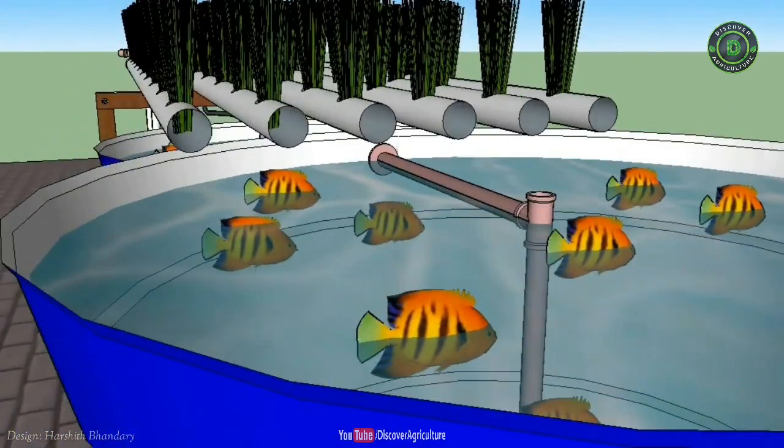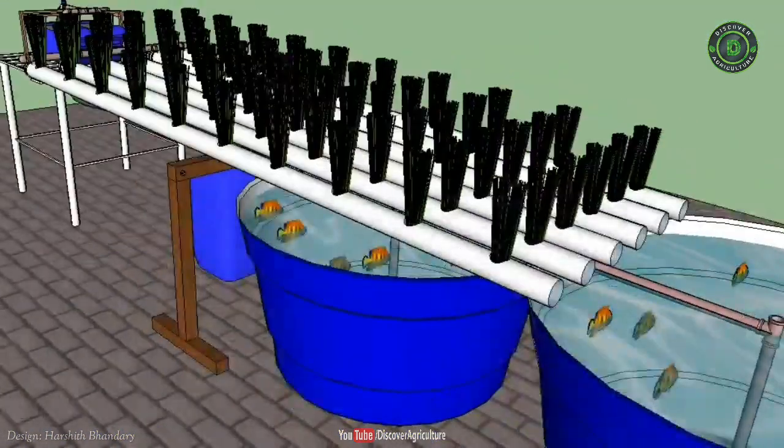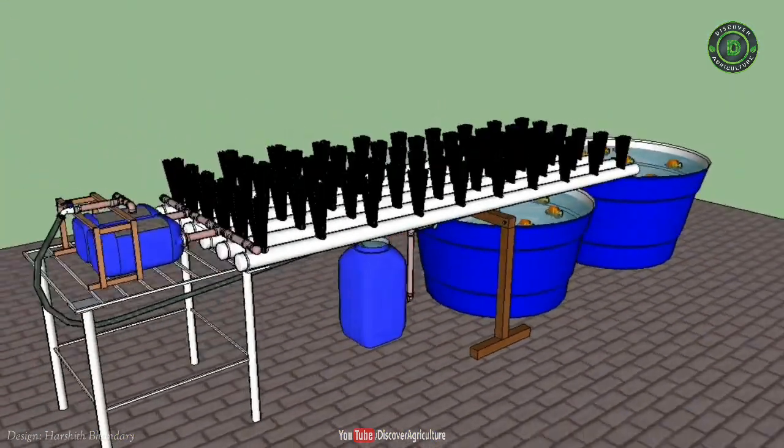Other suitable aquaponic vegetables include beans, broccoli, cucumbers, peas, spinach, squash, zucchini, and tomatoes.